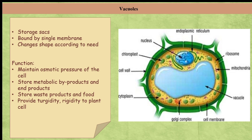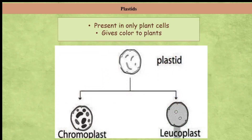The next organelle is plastids. Have you wondered why plants are green, or why flowers have colors like red, yellow, and orange? The organelle which gives such colors is called a plastid. It is only found in plant cells. Plastids have a double membrane and are of two types: first is chromoplast, which is a colored plastid, and the second is leukoplast, which is white or colorless.